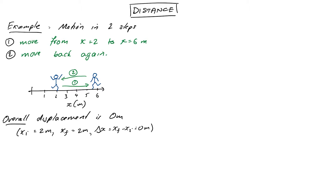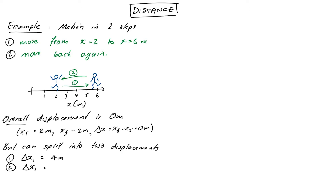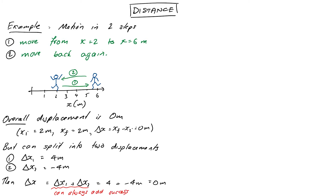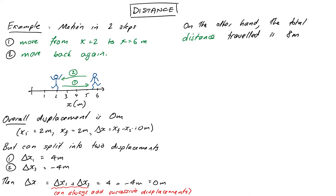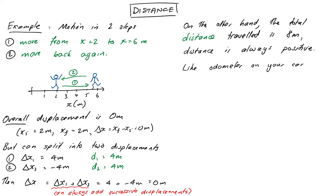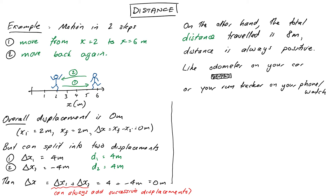Something we can do with displacements is split them into pieces. I can split my motion into two pieces with two different displacements: the first is +4 meters to the right, and the second is –4 meters moving back to the left. Adding the individual displacements gives an overall displacement of 0. But when talking about distance, which is slightly different, both legs travel a distance of 4 meters — there are no negative signs for distance; it's always positive. So my total distance is 8 meters, 4 each way. Think of distance as measuring how far you've gone no matter what direction you're pointing — like the odometer on a car, or a run tracker on your phone, which never goes backwards but just accumulates your cumulative distance.